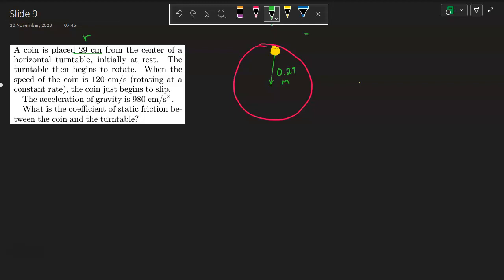The turntable begins to rotate when the speed of the coin is 120 centimeters per second. This speed that they're giving you, this is your tangential velocity, V tangential. You need to divide this by 100 to convert it to meters per second. So that's 1.20 meters per second.